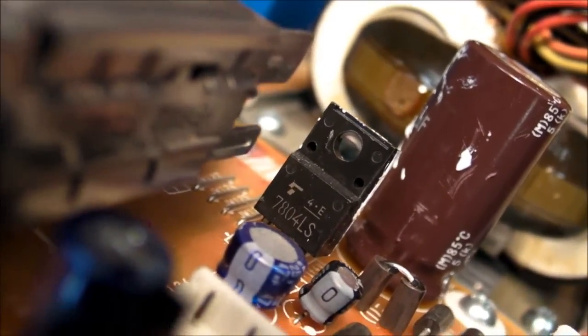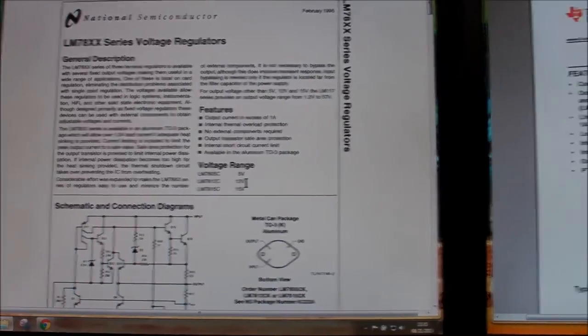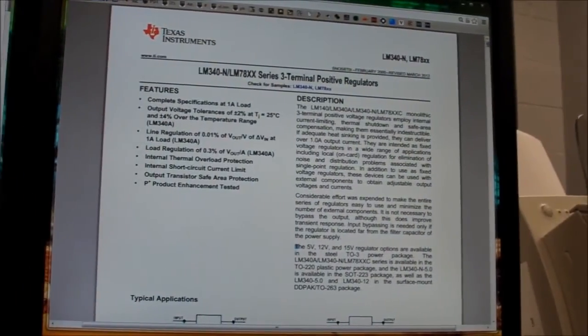Here's National Semiconductor from February 1995. You can see they've only ever had the 5 volt, 12 volt, and 15 volt regulators. A couple years ago they were acquired by Texas Instruments, which maintains that 5, 12, and 15 volt regulator selection.